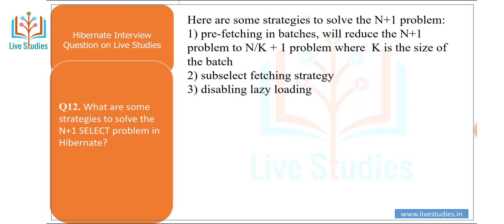Next question: what are some strategies to solve the N+1 selection problem in Hibernate? There are some strategies: first, prefetching in a batch — this reduces the N+1 problem to N divided by K plus 1, where K is the batch size. Second is the subselect fetching strategy. Third is disabling lazy loading.